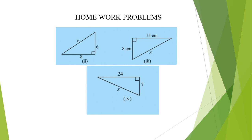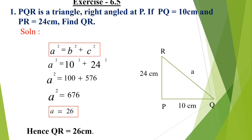Here you are having 3 more problems as homework. Now we are moving to exercise 6.5. They are giving it in statement form. PQR is a triangle with a right angle at P. The measurements are PQ equals 10 centimeters and PR equals 24 centimeters. Find QR. I am writing QR as A for finding it using the Pythagoras property.